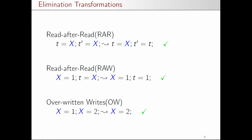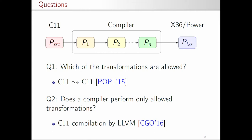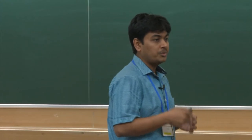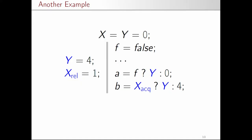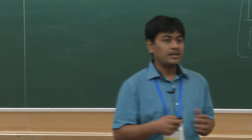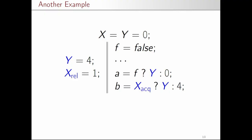Once we had this set of transformations, in CGO 2016 we checked whether a compiler like LLVM actually follows these safe transformations when performing optimizations. We took several example programs, compiled them with LLVM, and then checked whether the transformations were done correctly. Here is one such program compiled by LLVM -O3.